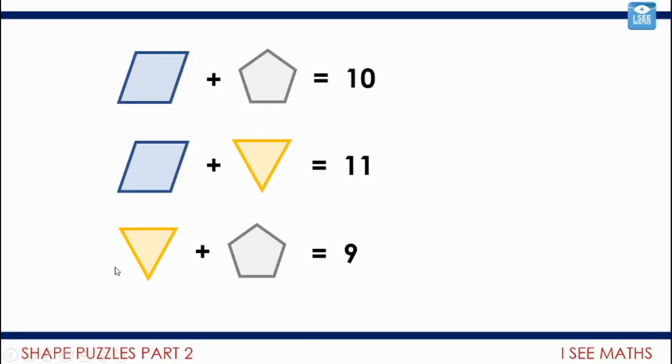So let's have a look at this bottom line. I know that the triangle is one more than the pentagon. And in total, they're nine. We looked at these kind of puzzles last week. So that must mean that the triangle must be worth five, the pentagon four, because I know the triangle is worth one more than the pentagon. And they've got a sum of nine. So what does that mean for our rhombus? It must be worth six.